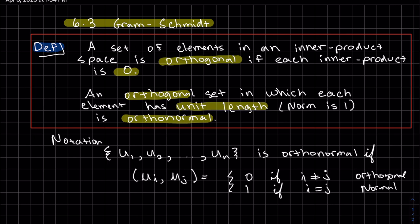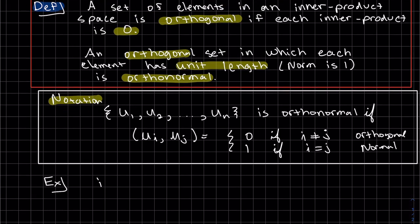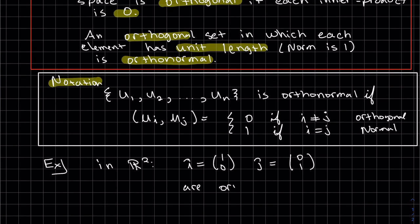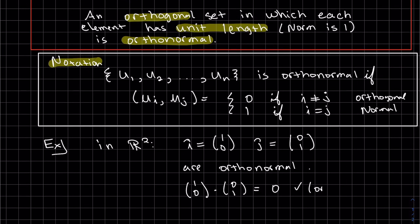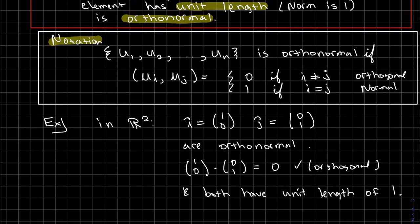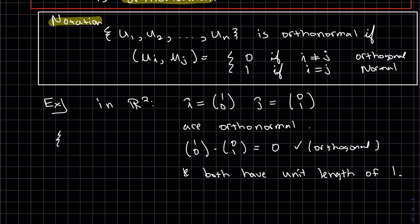Here's an example. In R², i = (1,0) and j = (0,1) are orthonormal. They both have unit length of 1, and they're perpendicular, they're orthogonal, because their inner product, the dot product, is 0. So this is our orthonormal set.